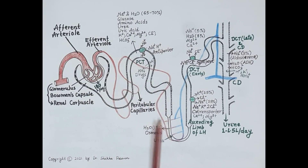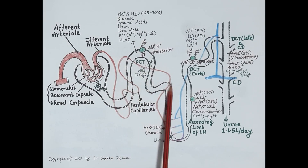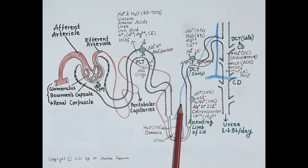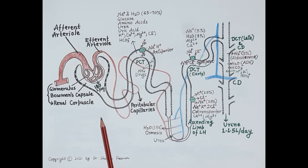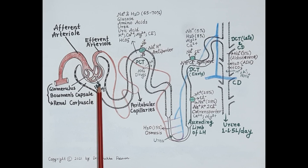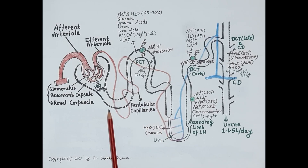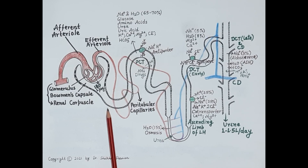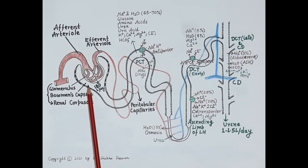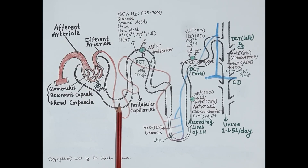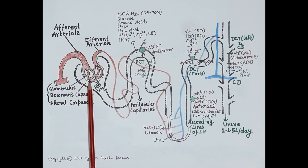This diagram shows the structure of a nephron. These are the peritubular capillaries, also termed as vasa recta. The most important function of kidneys is to filter and purify blood and remove waste toxic products in the form of urine. The structural and functional unit of the kidney is the nephron, and each kidney consists of around 1 million nephrons. There are three main steps in the formation of urine: glomerular filtration, selective reabsorption, and secretion.